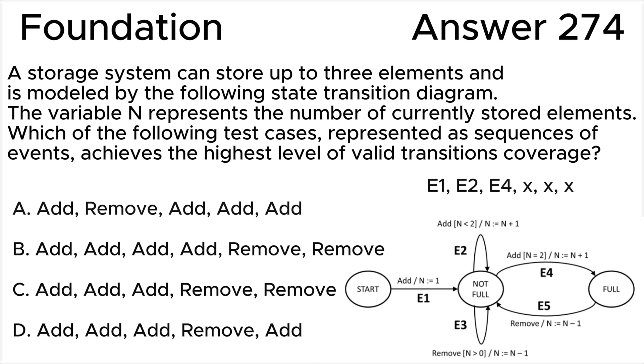Test B is infeasible because after the first three Add actions, the system is in the Full state and there is no valid transition going from Full triggered by the Add event. After the first three transitions, only 60% of valid transition coverage is achieved.